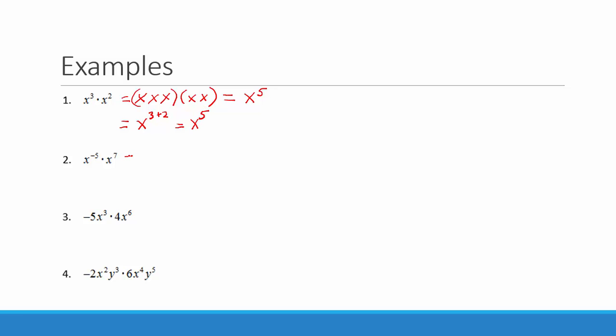Our next example: we multiply x to the negative fifth times x to the seventh. When we multiply like bases we add the exponents, so negative 5 plus 7 gives us x to the second power.